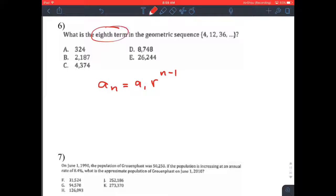We're supposed to find the 8th term, so we're trying to find a sub 8. It's going to be equal to a sub 1. a sub 1 is the first term, which is 4, times the rate. Well, 4 times 3 is 12, 12 times 3 is 36. So we're multiplying by 3 each time. So it's 4 times 3 to the n minus 1.